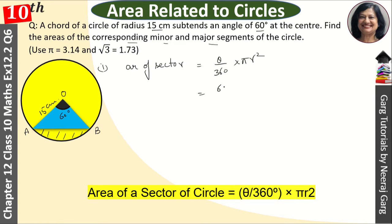Theta is 60 upon 360 into pi. We have 3.14 and r given is 15. This is 6 cancel, it is 6 times cancel. It is decimal, it is 100, it is 5 to 3.